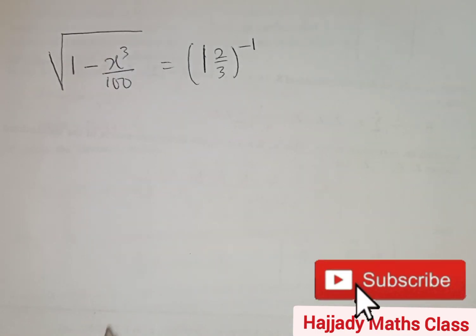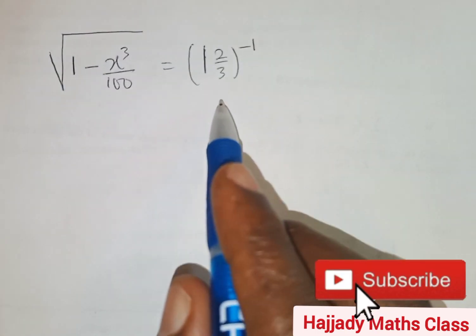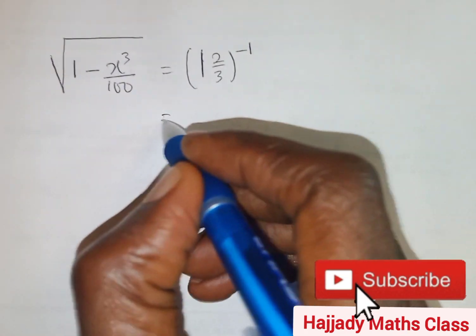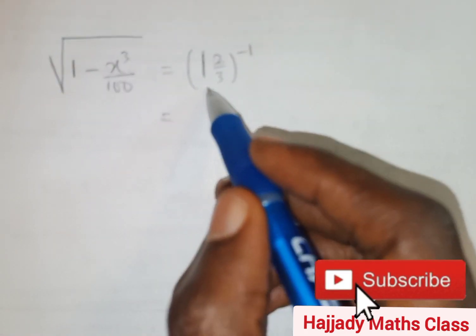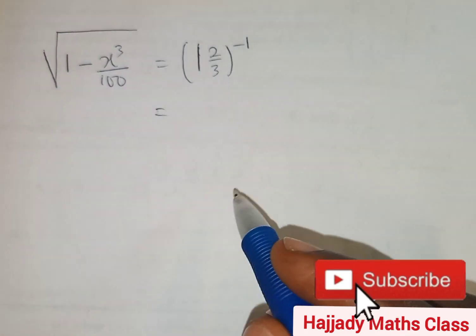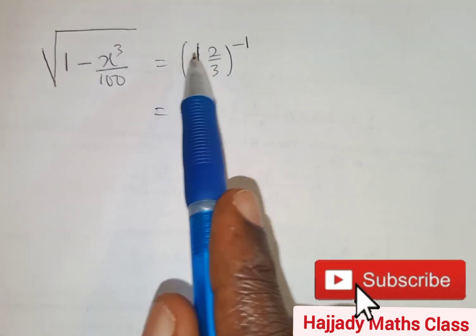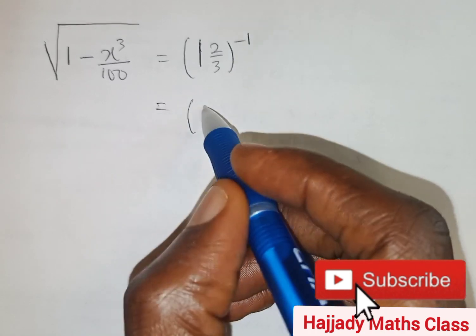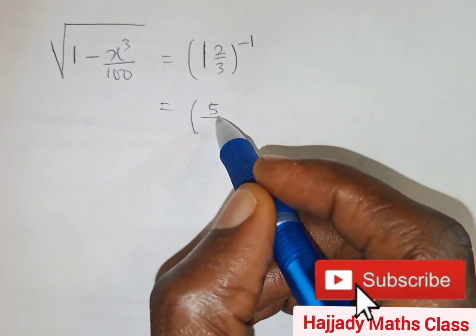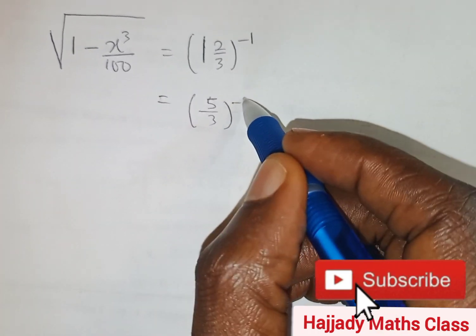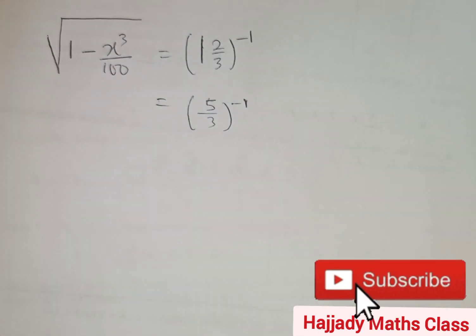Now doing this, let's solve the right hand side first. We all know that this is a mixed fraction, so changing a mixed fraction to an improper fraction will be 3 times 1 is 3, plus 2, we have 5 over 3 raised to the power minus 1. So that's what we have.